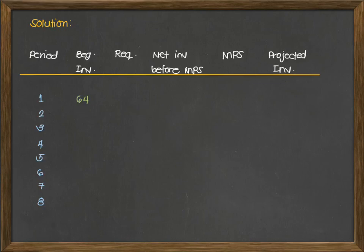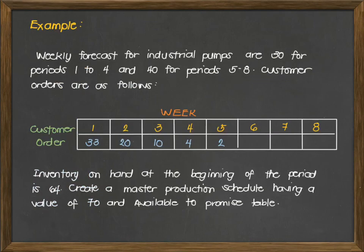For our solution in the master production schedule, we have to compare the actual customer order and the forecast. Whichever between the two is higher is the one we'll use as the actual requirement for the master production schedule. Looking at period 1, it is 33, which is larger than our forecast of 30. After that, for weeks 2 to 5, the forecast value is already larger, so that will be used as our requirement for the table.